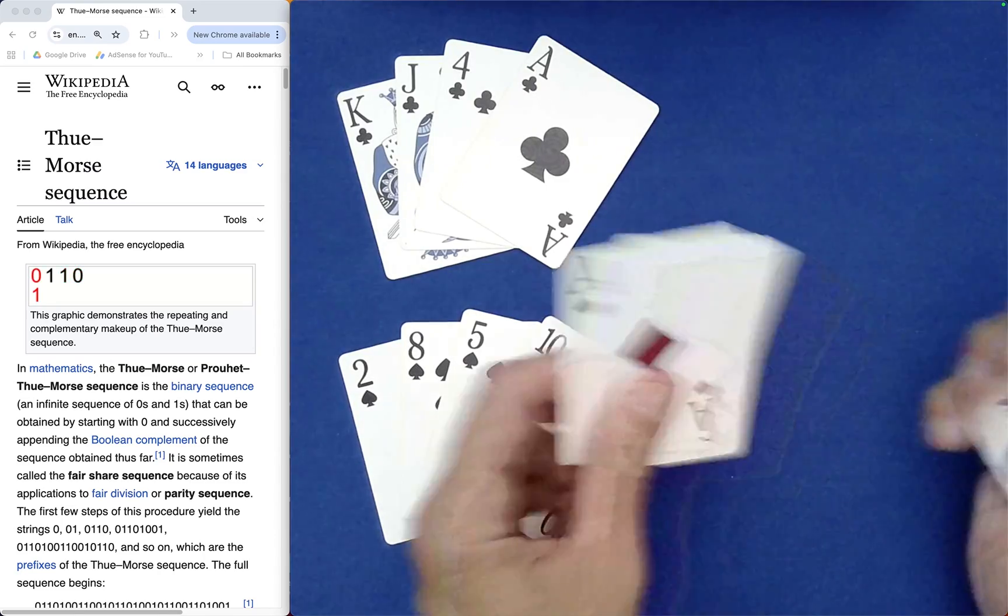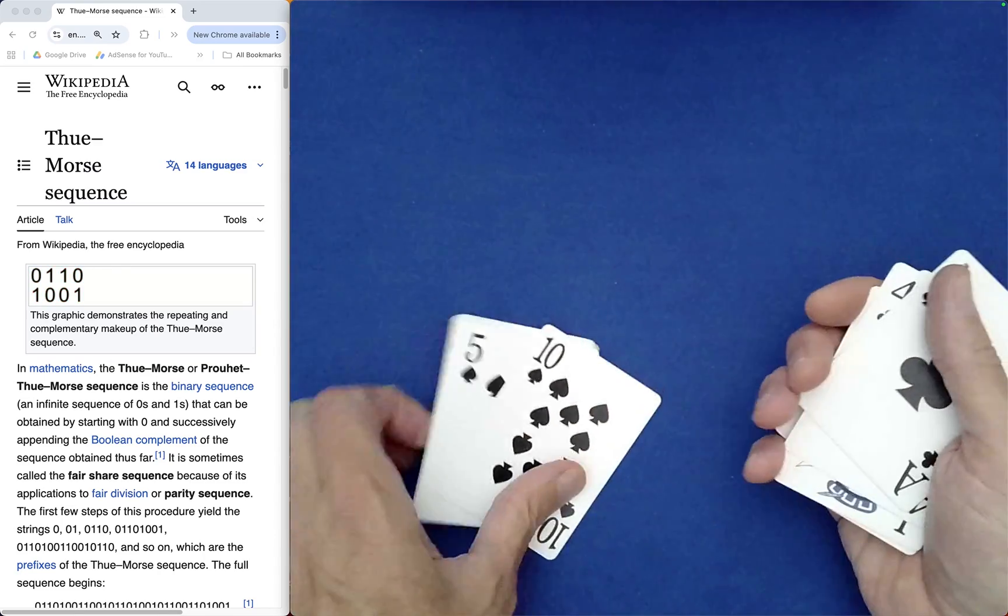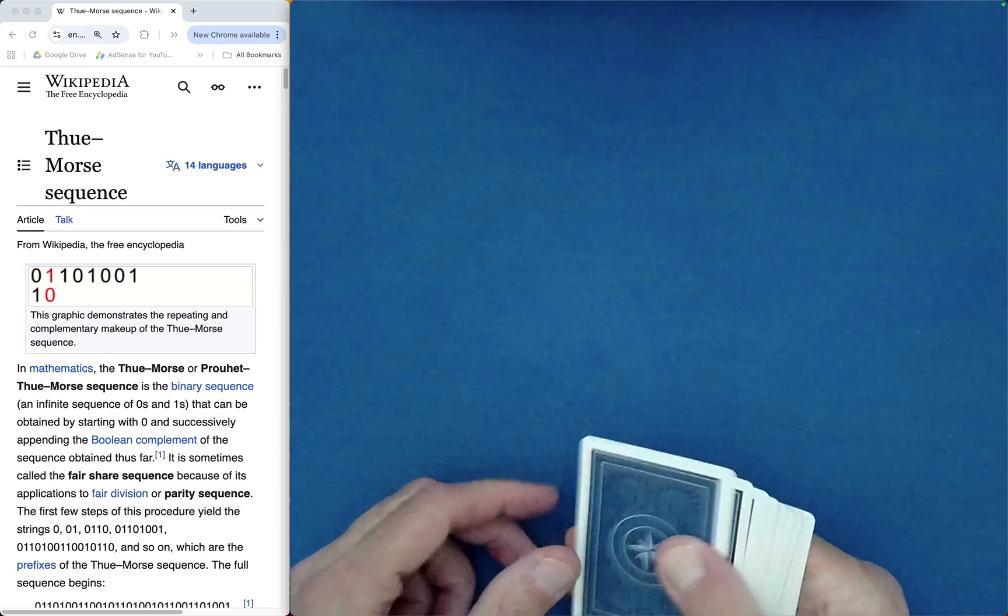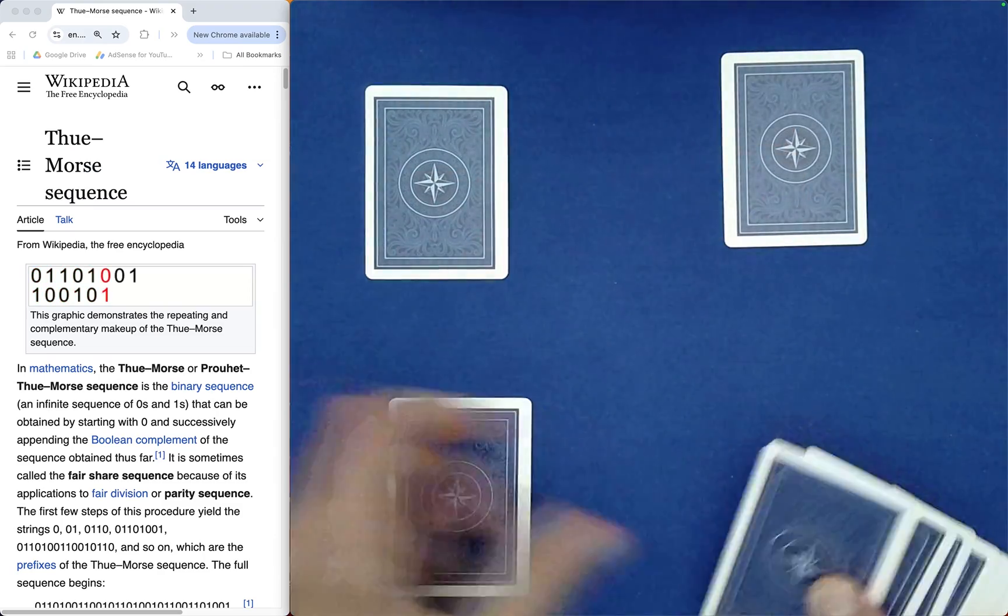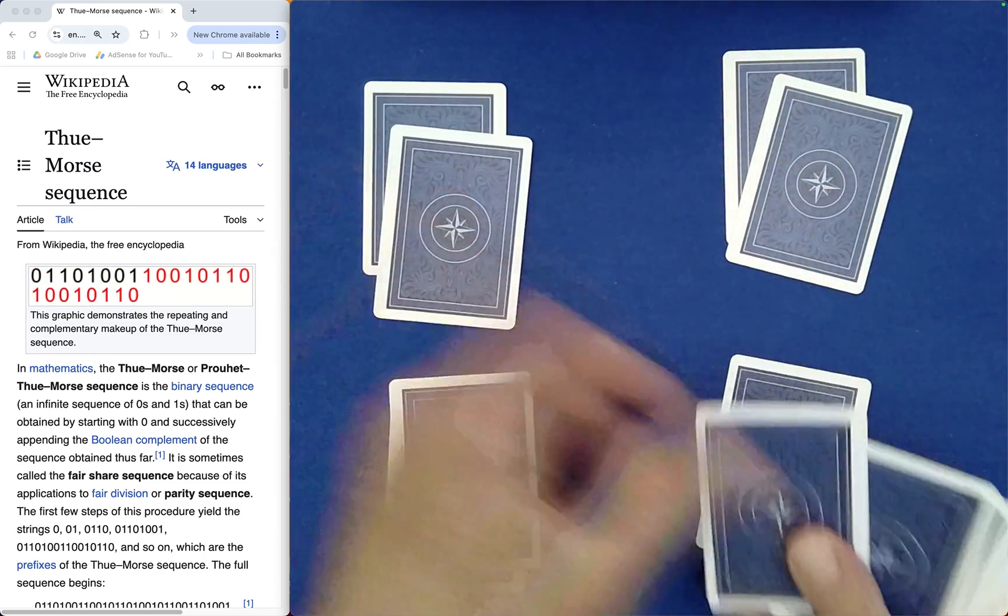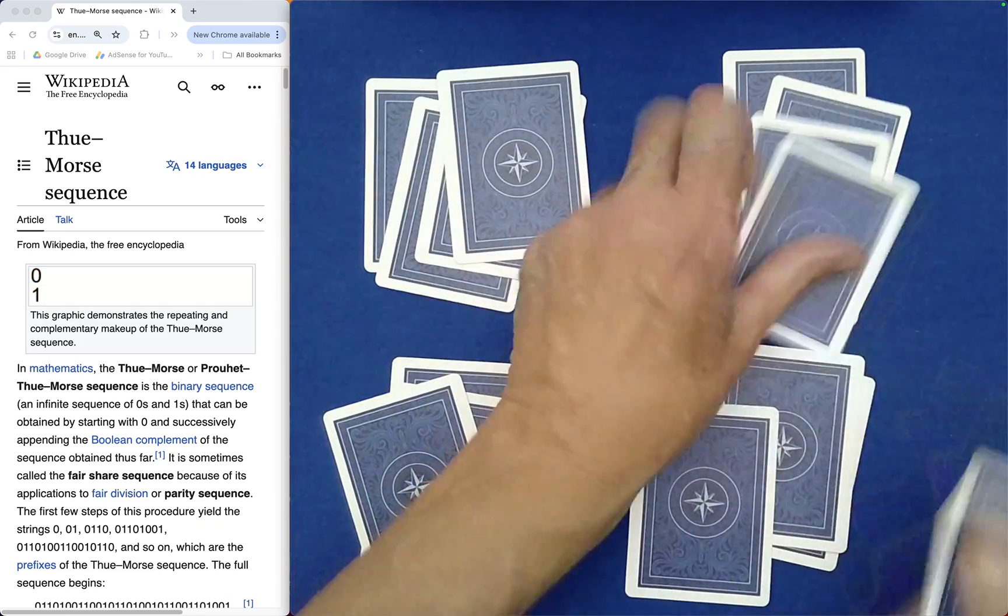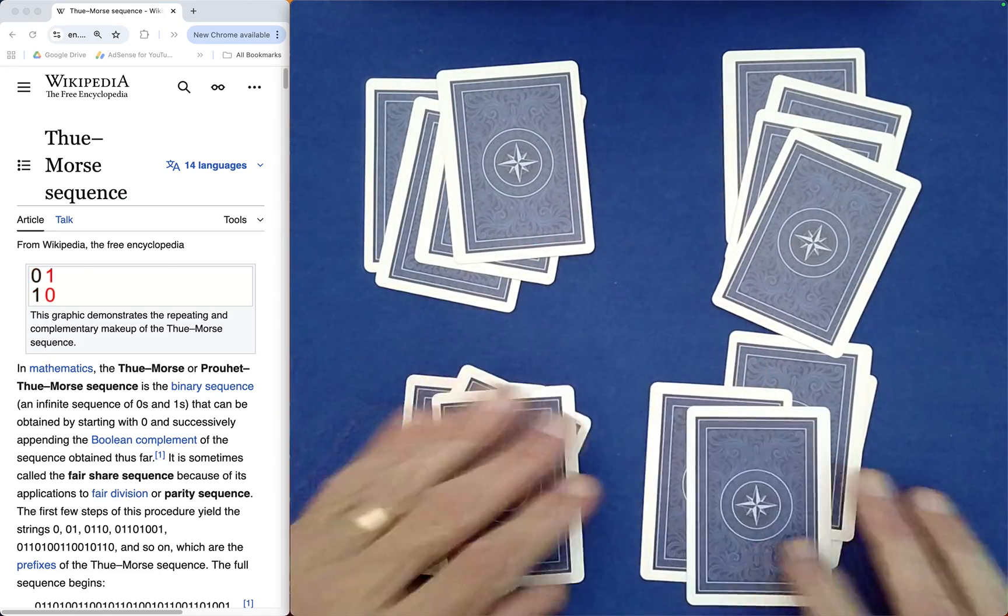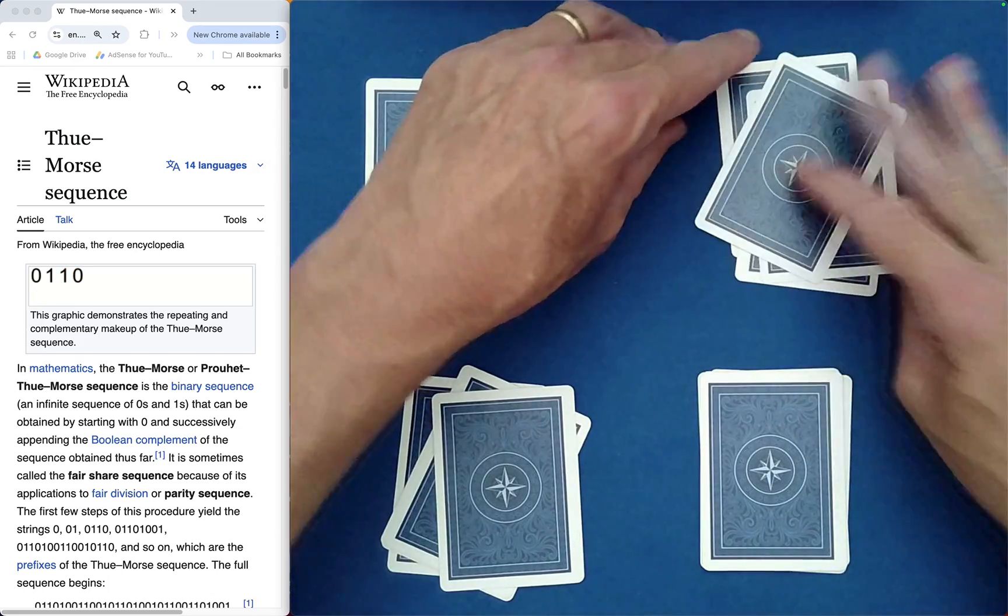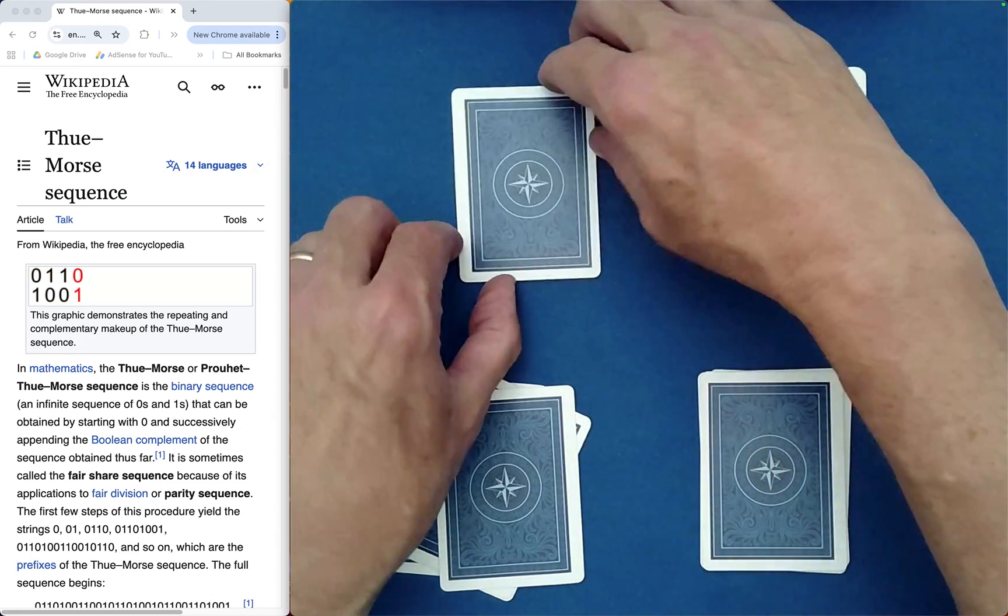What next? Diamonds, clubs, spades. Very good. So what we're going to do is we're going to deal them out into four piles. We can even go like this if you like. Four piles of four cards each.